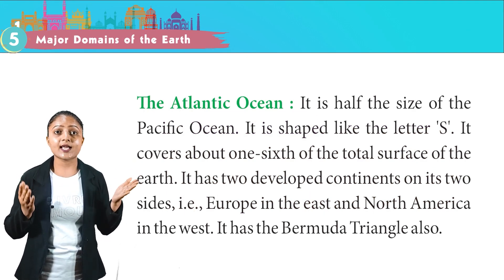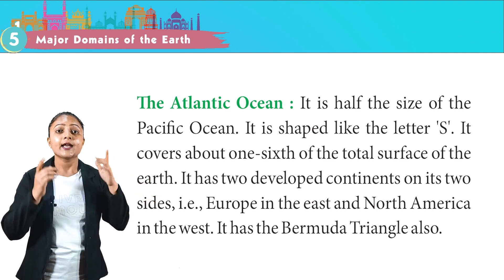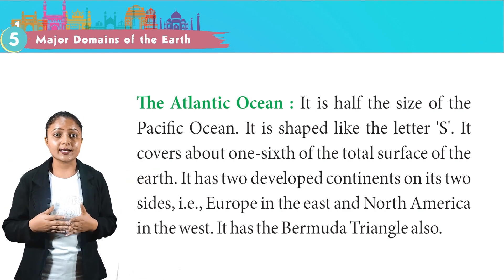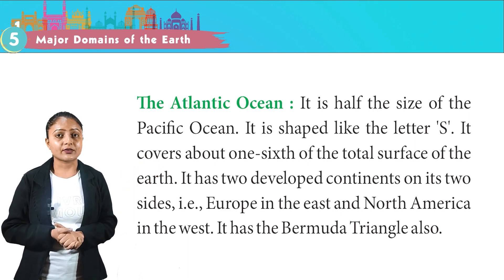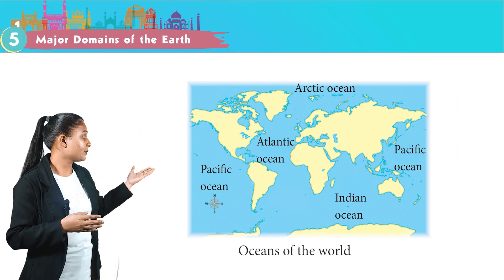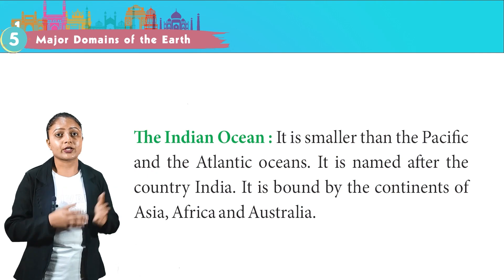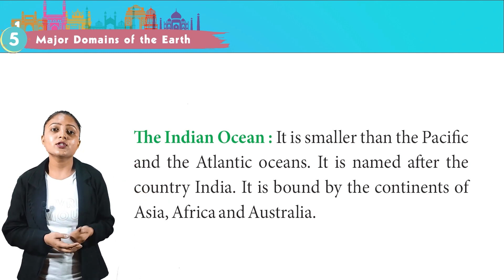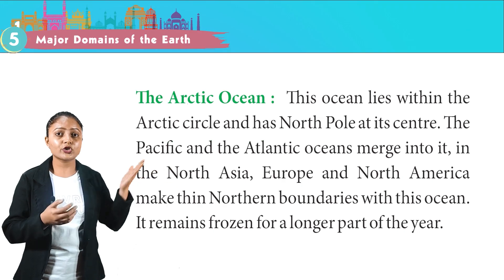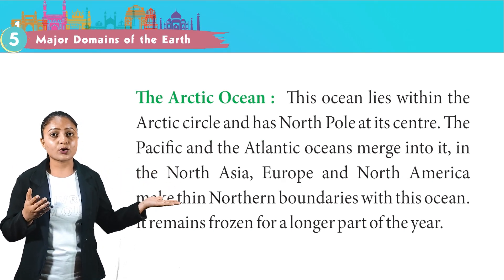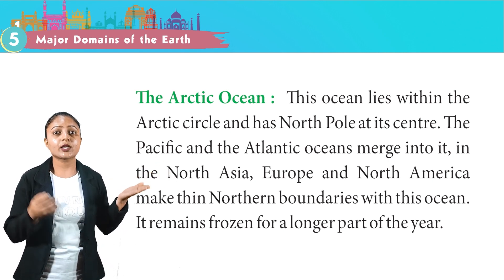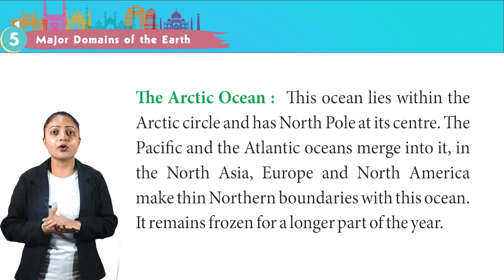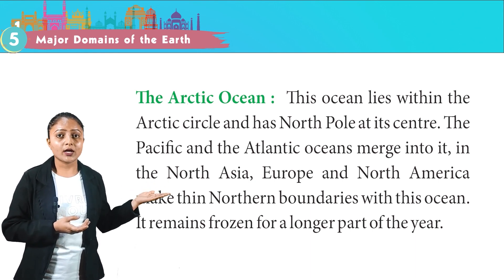The Atlantic Ocean is half the size of the Pacific Ocean, shaped like the letter S, and covers about one-sixth of the total surface of the earth. It has Europe in the east and North America on the west, and also has the Bermuda Triangle. The Indian Ocean is smaller than the Pacific and Atlantic Oceans and is named after the country India. It is bounded by Asia, Africa and Australia. The Arctic Ocean lies within the Arctic Circle with the North Pole at its center. It remains frozen for a longer part of the year.